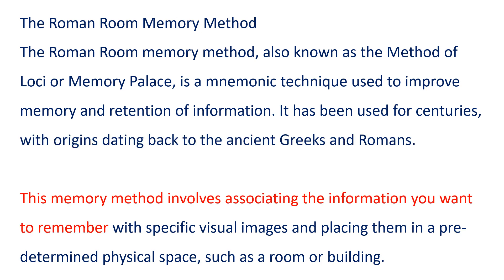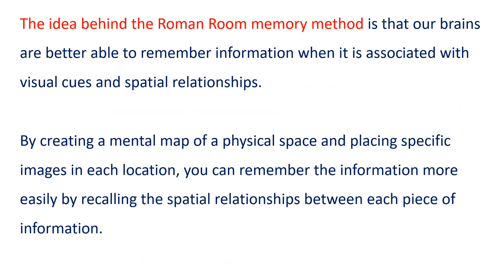This memory method involves associating the information you want to remember with specific visual images and placing them in a predetermined physical space, such as a room or building. The idea behind the Roman Room Memory Method is that our brains are better able to remember information when it is associated with visual cues and spatial relationships.